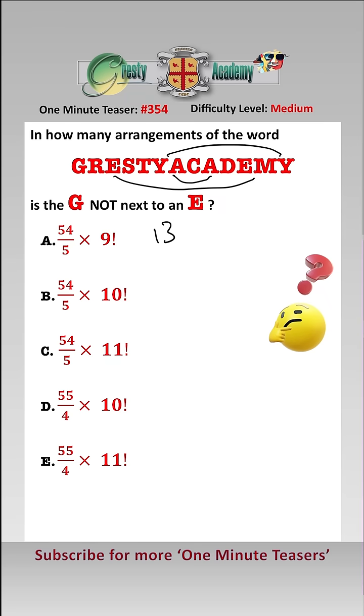First, the number of arrangements is 13 factorial over 2 factorial, 2 factorial, 2 factorial. But then we have to take away the arrangements where GE is next to each other. If we use that as one super letter, GE, then there are 12 factorial over 2 factorial, 2 factorial arrangements of that. That is the duplicates of A and Y.